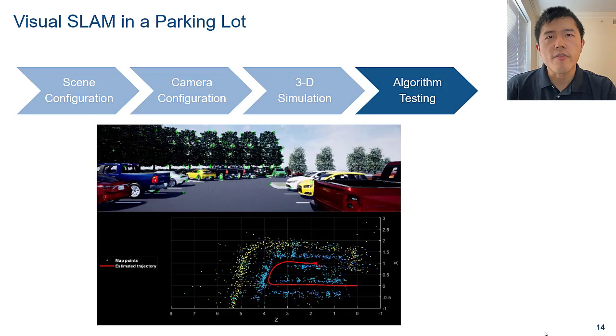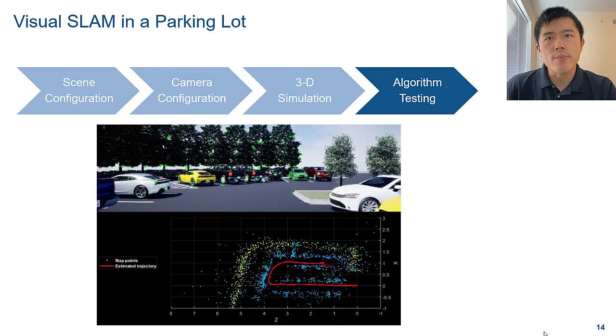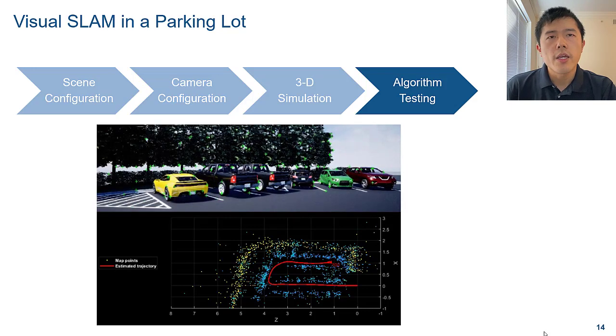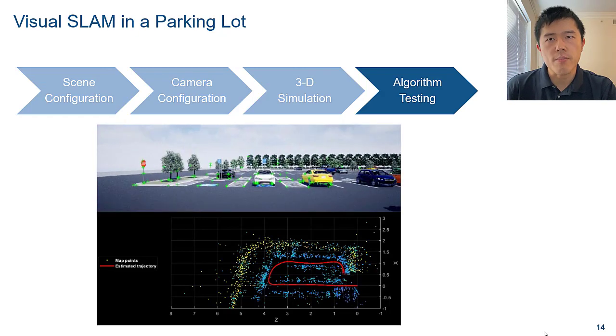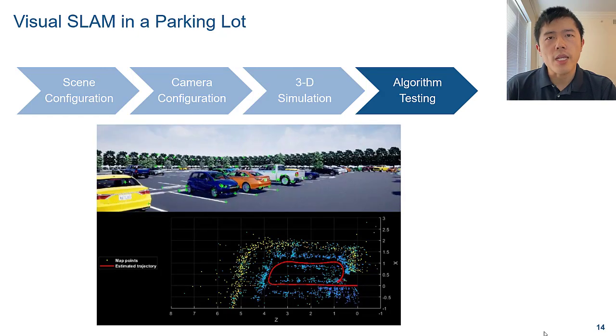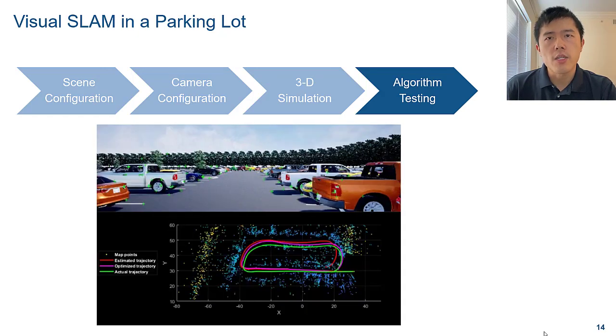Now you can test the Visual SLAM pipeline to build a map of the parking lot. Here, the top figure shows the tracked features in the current frame. The lower figure displays the reconstructed parking lot and the estimated camera trajectory.